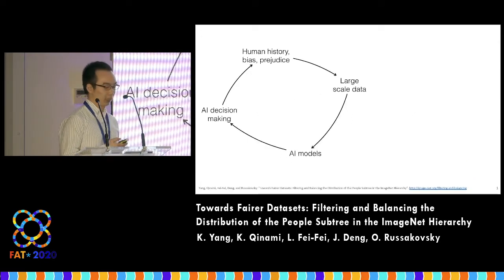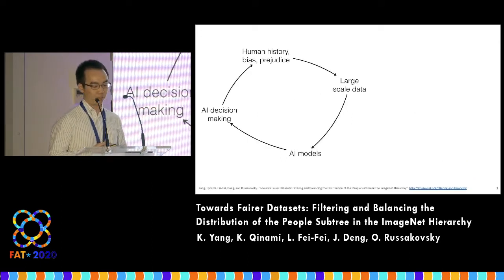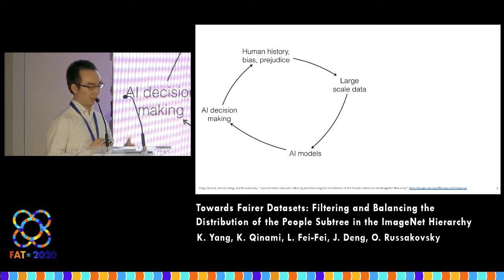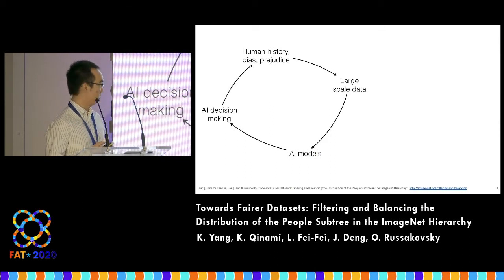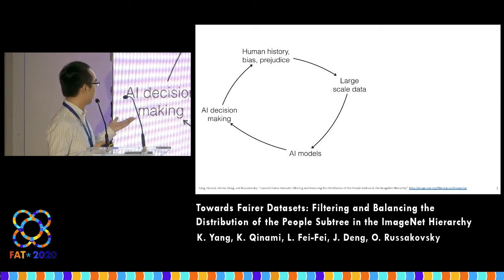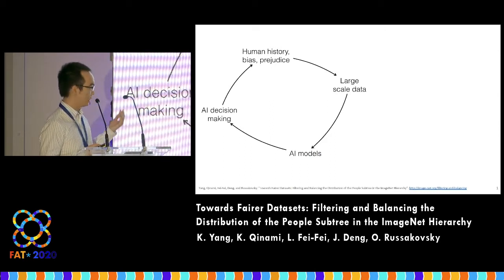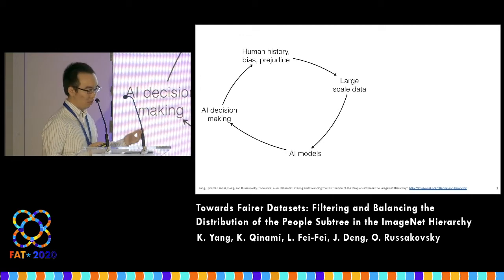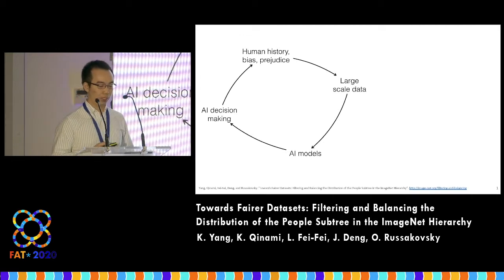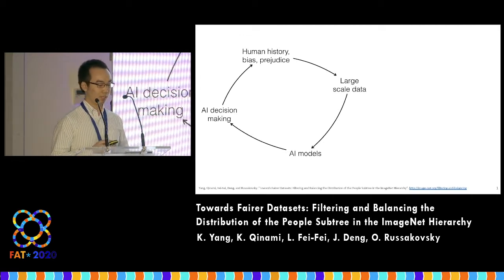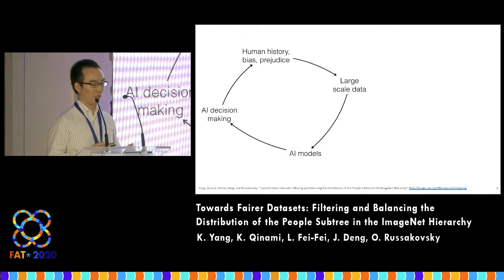We as a community have been talking about this cycle where human history, bias, and prejudice are making their way into large-scale datasets, which are used to train AI models and then become part of our work.